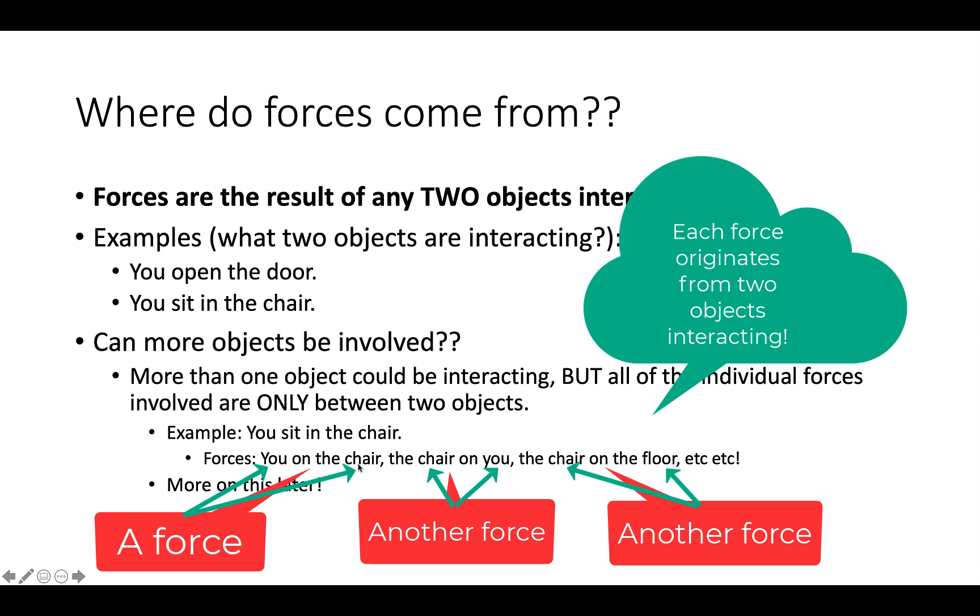The force of you on the chair is between you, one of the objects, and the chair. There could be many objects interacting, but in terms of individual forces, each individual force is the result of two objects interacting.